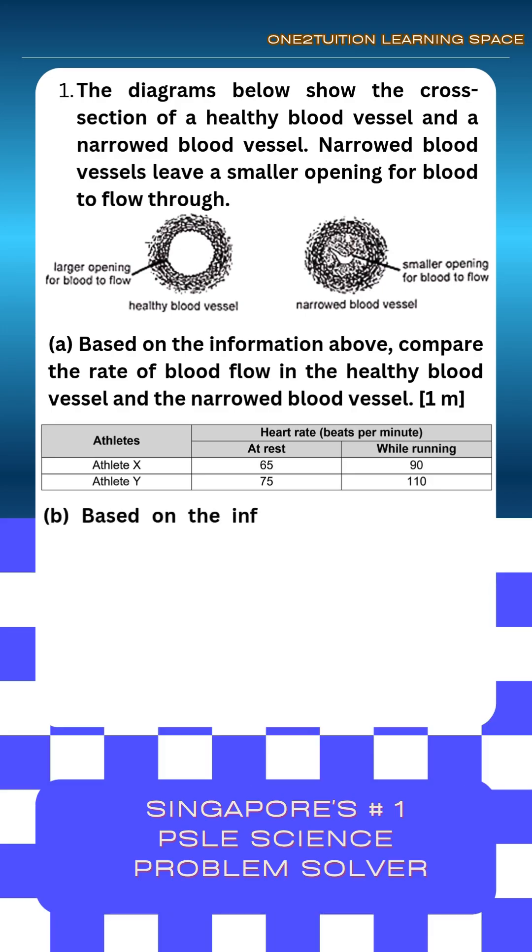B. Based on the information above, which athlete is most likely to have a narrowed blood vessel? Explain your answer.